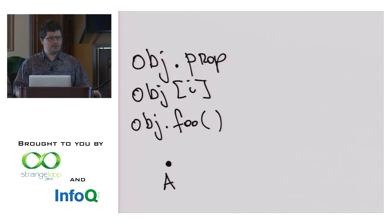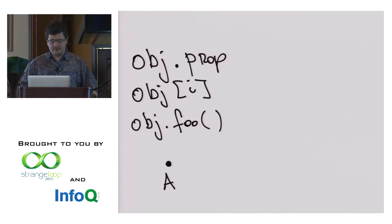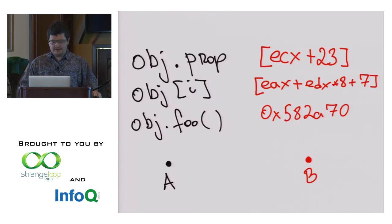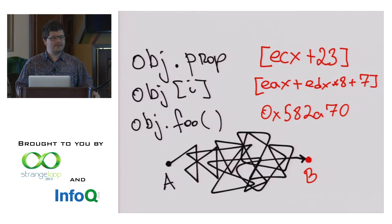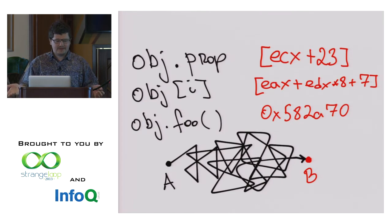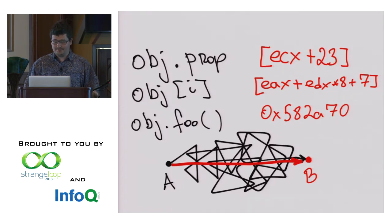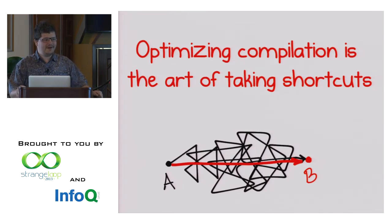What's actually the problem with optimizing dynamic languages like JavaScript or Dart? Because Dart is also a dynamically typed language. The problem is very simple: the programmer writes something that looks very simple, but the machine wants to execute something that looks very complicated. The runtime system has to walk a long and complicated path to get there, because it does not know where it's going. Once you arrive at the destination and know where it is, maybe next time you can take a shortcut and go directly there. It's a very simple idea, but it underlies everything that people optimizing dynamic languages do. Optimizing compilation is the art of finding these shortcuts and taking them.